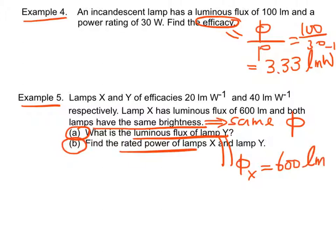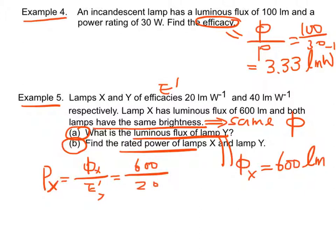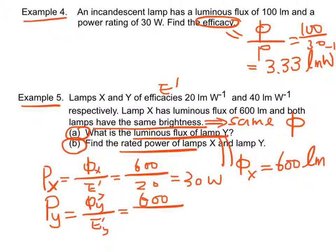The rated power of lamp X is equal to luminous flux over efficacy, which is equal to 600 over 40, which is 15 watts.